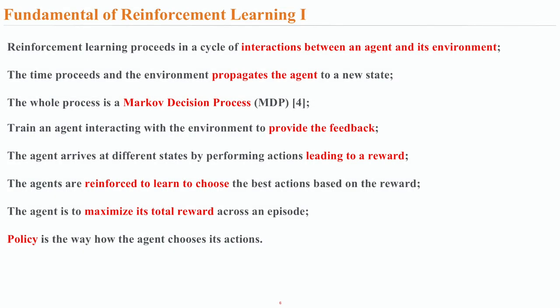After talking about the system model, we can move to the fundamentals of reinforcement learning, which proceeds in a circle of interactions between an agent and its environment. Moreover, as time proceeds, the environment propagates the agent to a new state. The whole procedure is much like a Markov decision process. We train an agent interacting with the environment to provide feedback. The agent arrives at different states by performing actions leading to a reward. The agents are reinforced to learn to choose the best actions based on the reward, and eventually the agent can maximize its total reward across an episode.